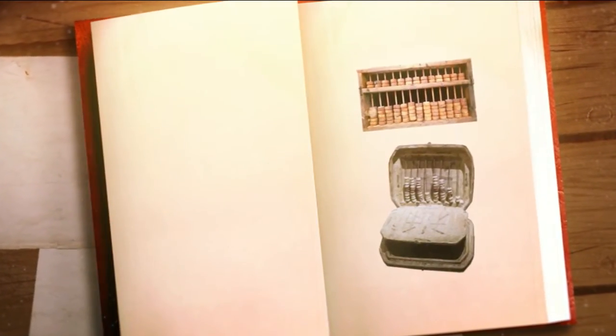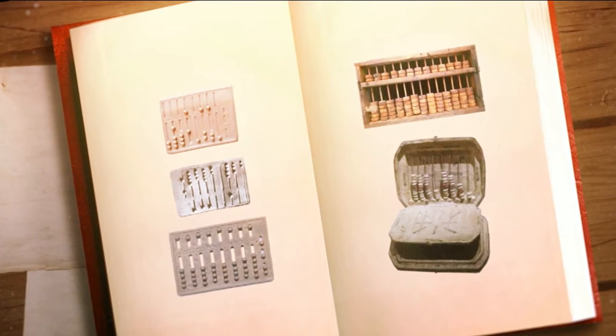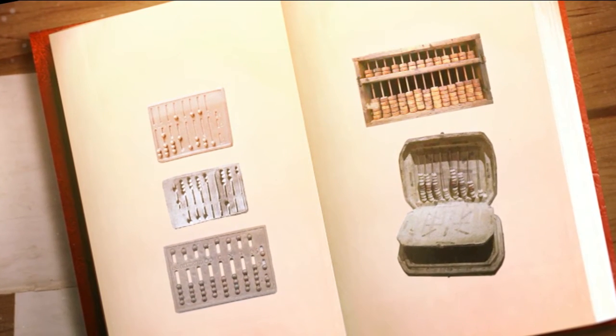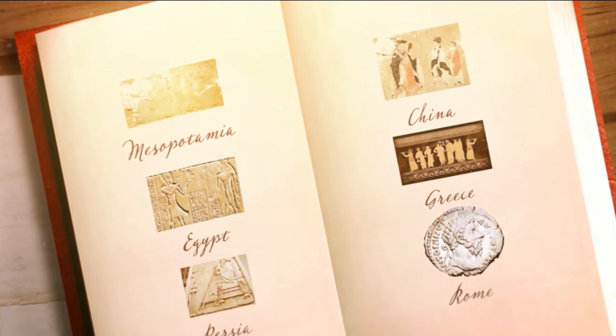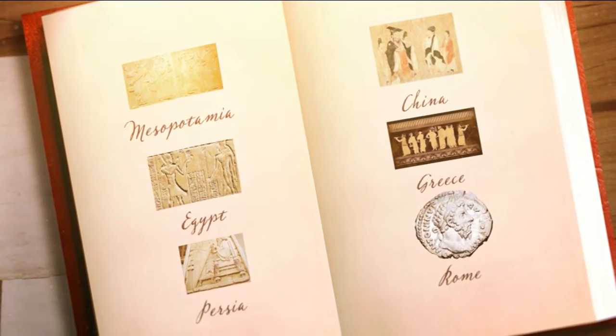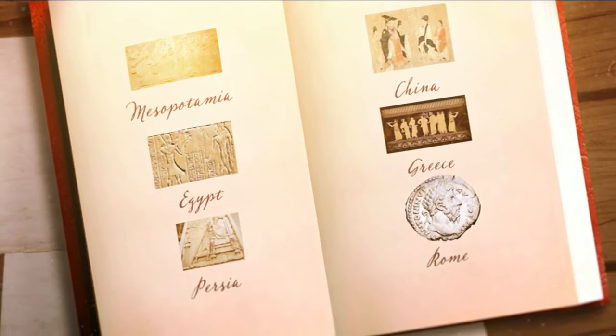Many historians say the very first abacuses appeared thousands of years ago. They were used by traders and merchants across many of the great ancient cultures, including Mesopotamia, Egypt, Persia, China, Greece and Rome.